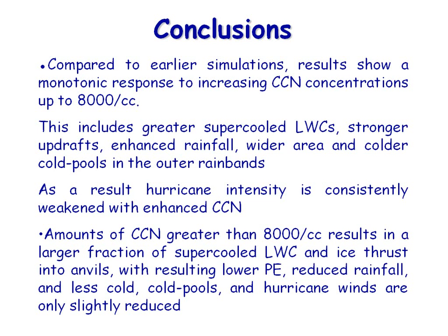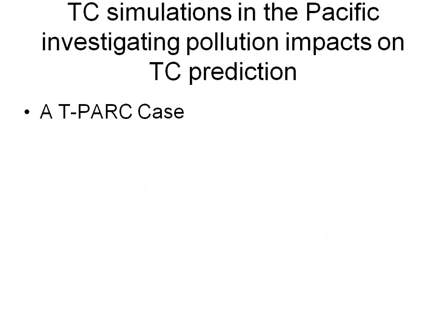Compared to earlier simulations, there's a monotonic response to increasing CCN up to a certain level, and then we go over the top. This includes greater supercooled water amounts, stronger updrafts, enhanced rainfall, wider area and colder cold pools — all consistent with the hypothesis. Above 8,000, more water mass is transported into the anvils, with a larger fraction of supercooled water and ice thrust into the anvils. The precipitation efficiencies didn't decrease, but cold pools are not as intense.